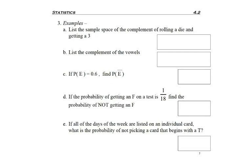Now let's look at some examples using complement. The first problem, 3a, says list the sample space—notice it's sample space, not probability—but list the sample space of the complement of rolling a die and getting a three. So that means we want not a three, because we want the complement, everything except for a three. So our sample space would be one, two, not a three, four, five, six—all the sides that are not a three.